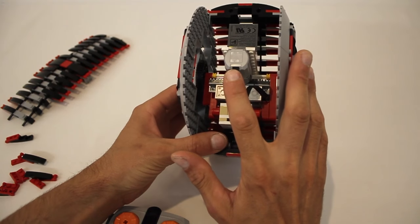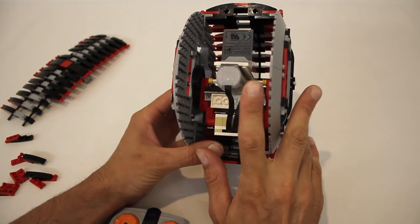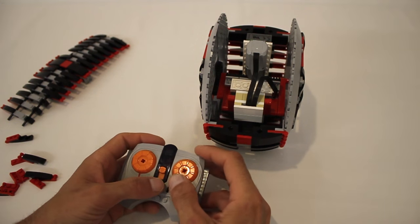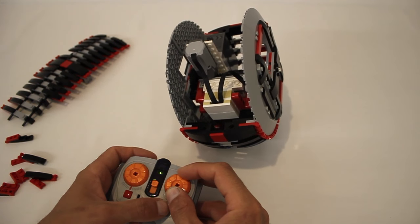For steering, I'm using this M motor, which slides the entire engine core from side to side along this gear rack. And as it goes to one side, the weight of it causes the wheel to lean, which causes it to turn in that direction.